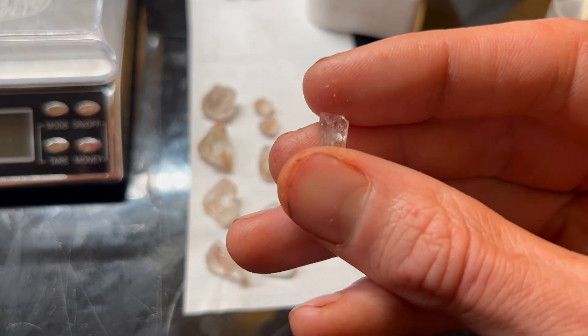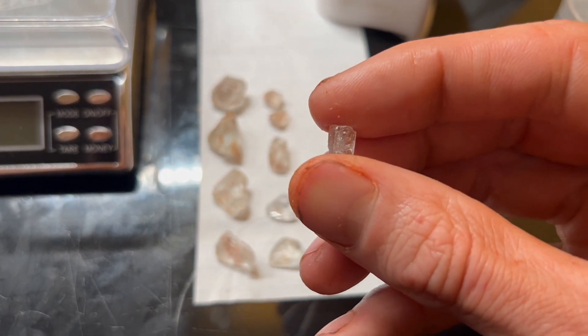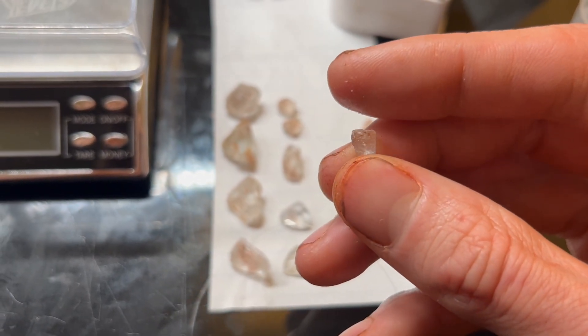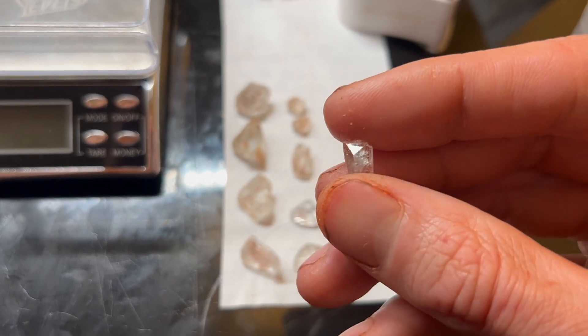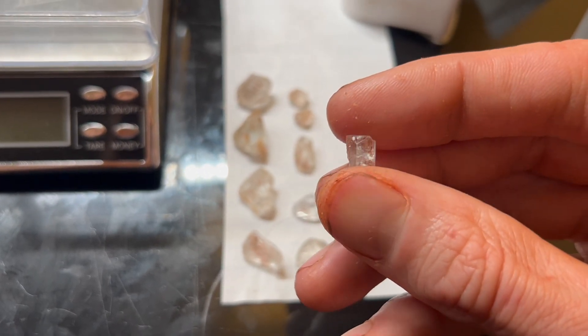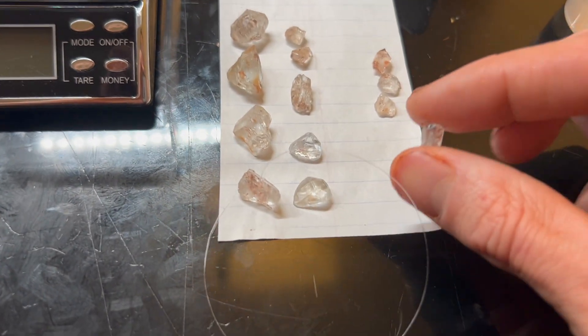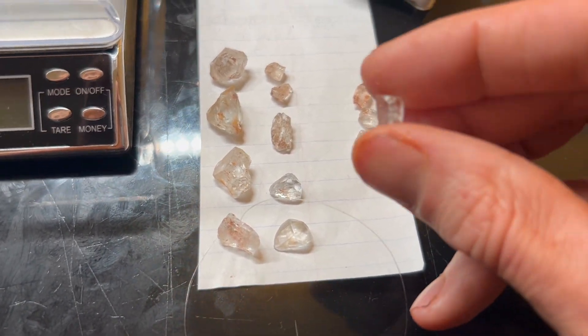Topaz is of the orthorhombic crystal system, meaning it has three axes, all perpendicular to one another, but all unequal in length. So it forms lath-type crystals, but sometimes they have complex terminations.